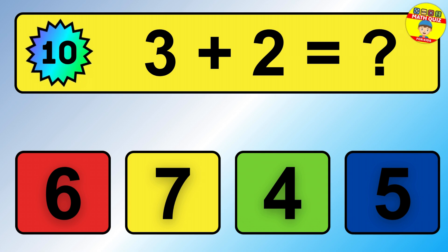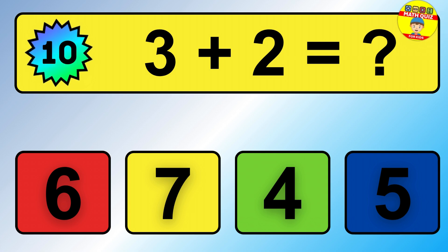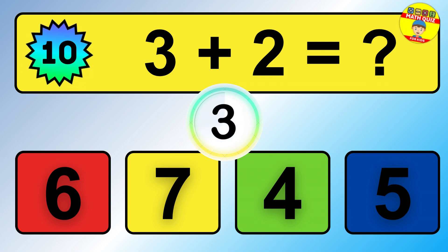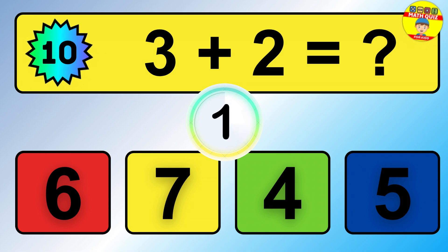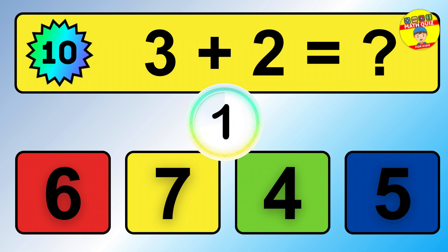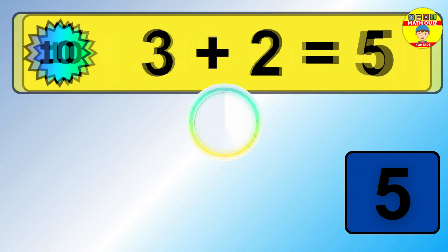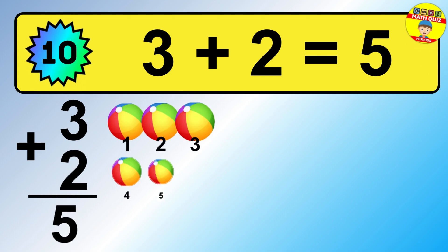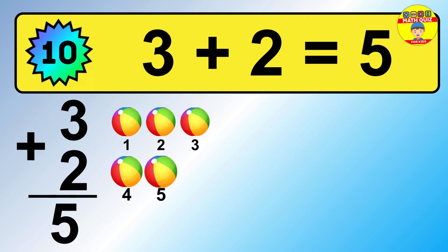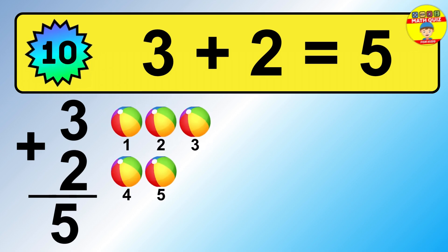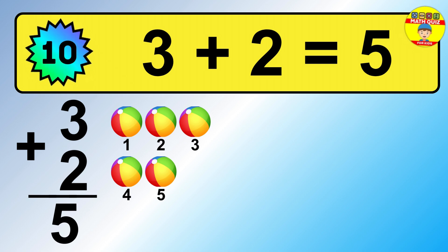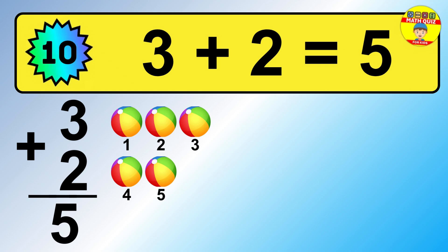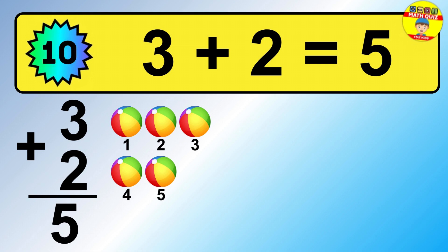Question 10. 3 plus 2 equals what? So the answer is 3 plus 2 is 5. Let's count it: 1, 2, 3, 4, 5.